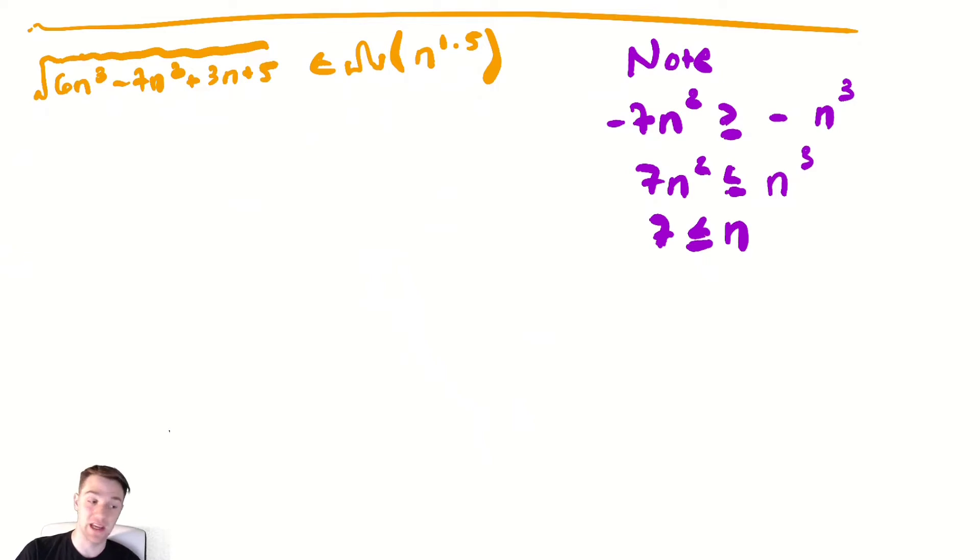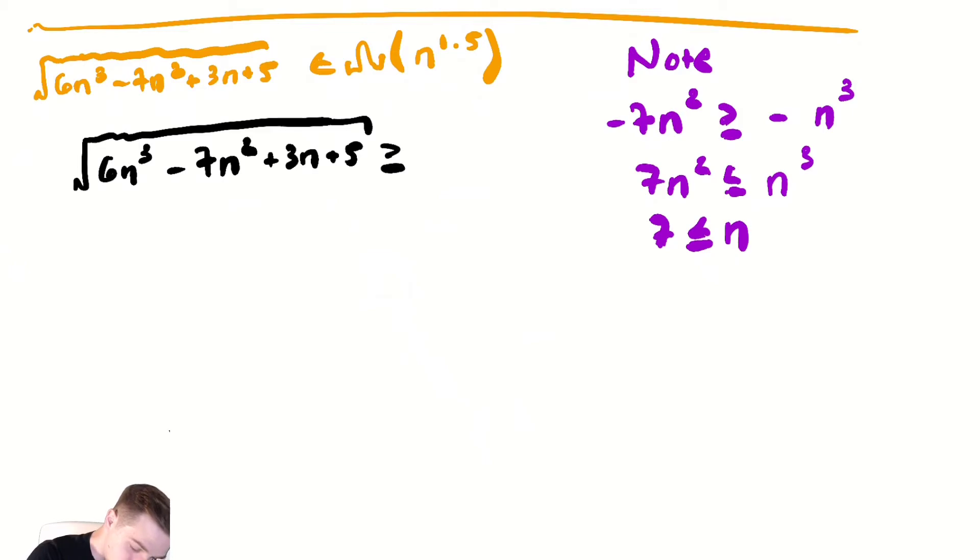So now let's actually write down the inequalities we need. So radical 6n cubed minus 7n squared plus 3n plus 5 is greater than or equal to radical 6n cubed minus n cubed. Then plus 0 plus 0. I'm replacing the 3n and the 5 with 0 because that makes it smaller. And by replacing the negative 7n squared with negative n cubed, I make it smaller so long as n is sufficiently large. Here sufficiently large happens to mean that it is greater than or equal to 7.